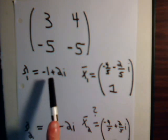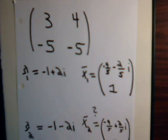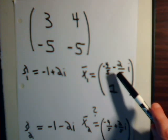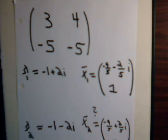Since the eigenvalues are complex conjugates of each other, when we determine the eigenvector that corresponds to this one, will it simply just be the complex conjugate of this eigenvector?